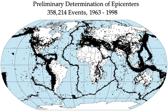Earthquakes that caused the greatest loss of life, while powerful, were deadly because of their proximity to either heavily populated areas or the ocean, where earthquakes often create tsunamis that can devastate communities thousands of kilometers away. Regions most at risk for great loss of life include those where earthquakes are relatively rare but powerful, and poor regions with lax, unenforced, or non-existent seismic building codes.